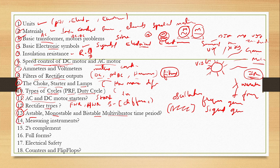Measuring instruments — we already have AC, DC, WM, power, and frequency, so we will discuss that. This is digital electronics. In digital electronics, two's complement and one's complement — we will discuss these problems.